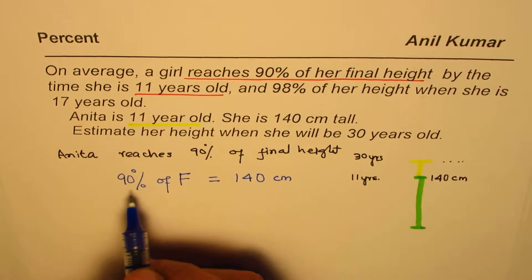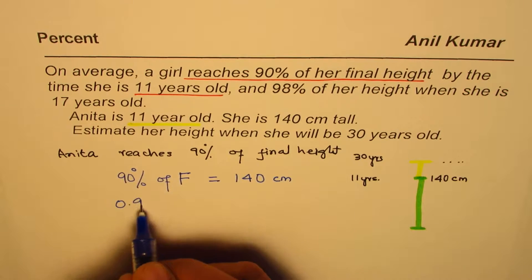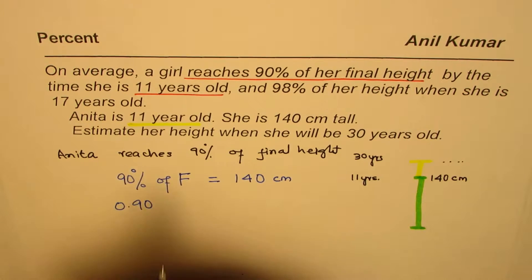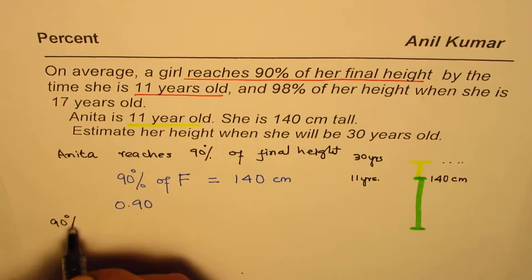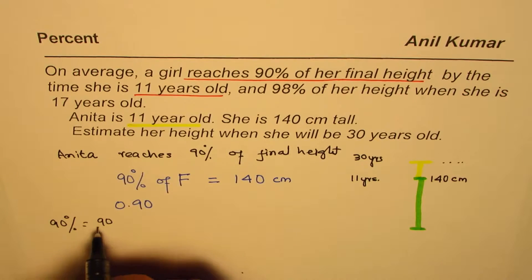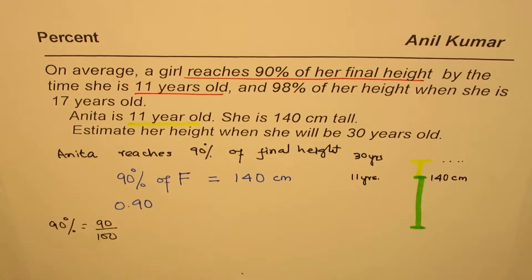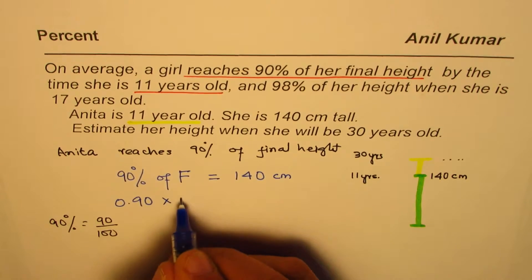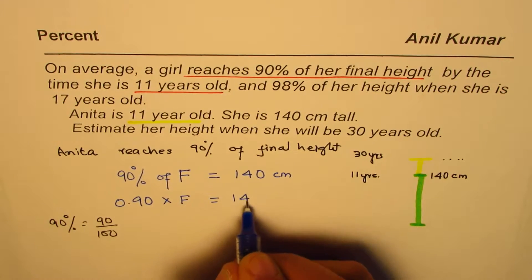90 percent is 0.90. How do we get it? Well, 90 percent equals 90 over 100, which is 0.9. So 0.90 times final height F — we don't know F — equals 140.